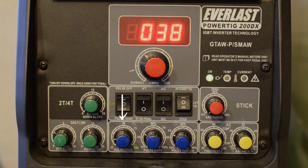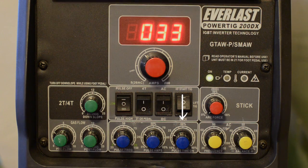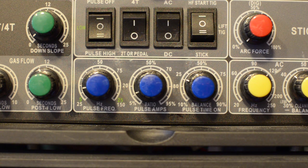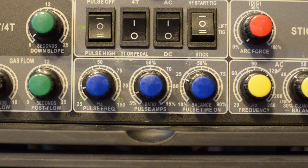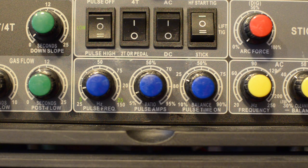Then we have the pulse frequency knob, the pulse amps, and pulse time on. Here's the settings I ended up with: I got my pulse frequency set to around one pulse per second, my amp set to 10%, and pulse time on to around 25%.